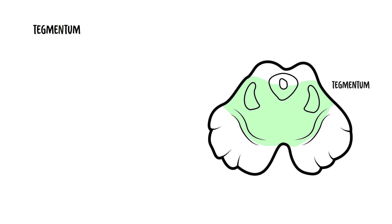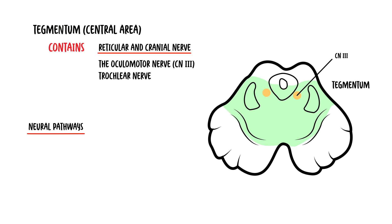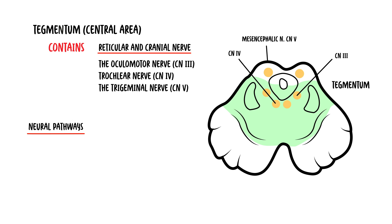The tegmentum is the central part of the midbrain and contains the reticular and cranial nerve nuclei, as well as several neural pathways. In particular, it contains the oculomotor nerve 3, the trochlear nerve which is cranial nerve number 4, and one of the nuclei of the trigeminal nerve, which is cranial nerve 5. You can also find what's called the red nucleus in this area.